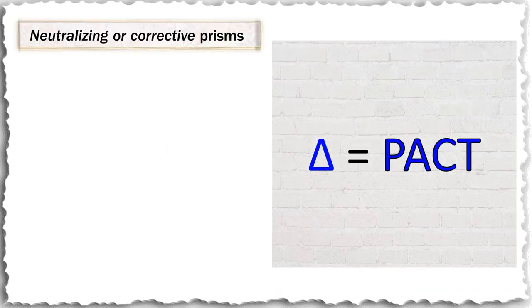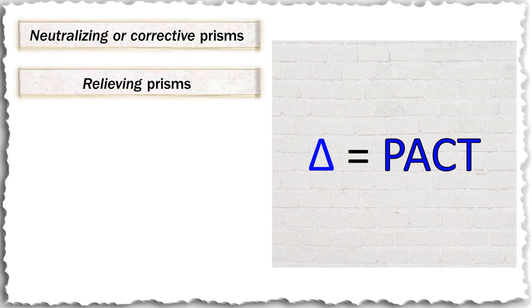Prisms may also be classified based on the function they perform. Neutralizing prisms are those whose power is equal to that measured on the prism and alternate cover test; since they cause the image to fall on the fovea, there is no stimulus for fusional vergences. With bifoveal stimulation, they are prescribed for patients with absent fusion vergence ability but who are capable of sensory fusion. Relieving prisms are of lesser magnitude than that measured on the prism and alternate cover test — these patients have reduced but not absent fusion vergences.